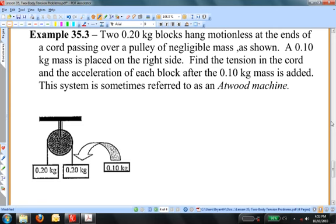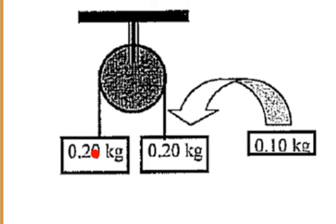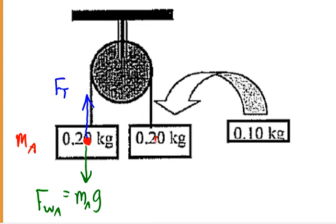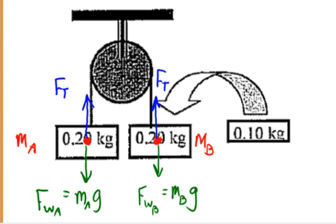Sketch a free body diagram for each of the objects. For the left-hand mass, I have the weight which pulls that mass downward, and the string tension that pulls upward. I'm going to call this object mass A instead of mass 0.20, because that becomes a bit cumbersome to write. On the right-hand side, I'm going to call this mass — when the 0.1 kilogram mass is added to it — mass B. We'll see there is the weight of object B, which is now 0.3 kilograms, and the string tension that acts on it. There's the first step: we've sketched a free body diagram for each of the objects.